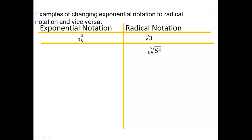So negative is going to stay on the outside. You have 5 to the what? 5 to the 2/3. The 3 is the index, which is the denominator of the exponent. And 2 is the numerator of the exponent. And the negative stays on the outside.